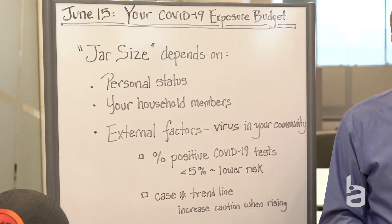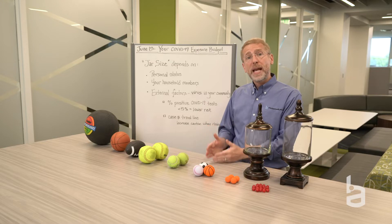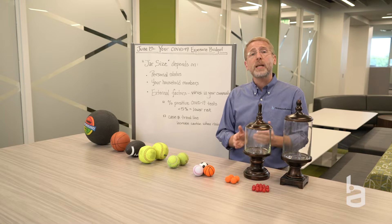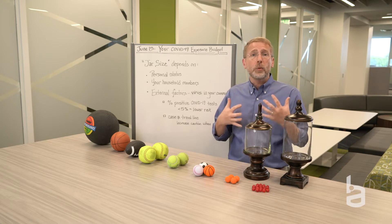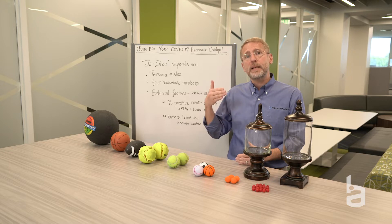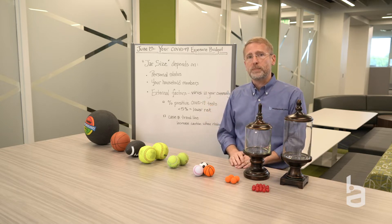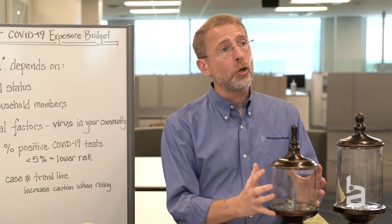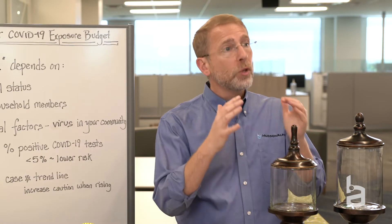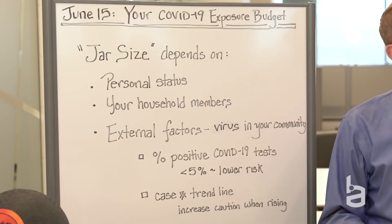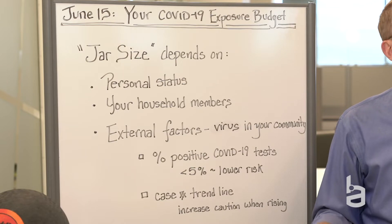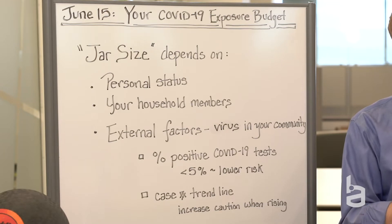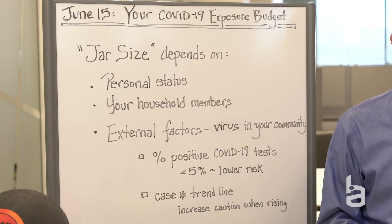The first is your own personal status, your own level of risk. We know age, gender, underlying risk factors like obesity and diabetes, and ethnicity — those are all things that influence an individual's risk of having a more severe set of symptoms if they get infected. If you have those higher-risk factors, your exposure jar is smaller in order to reduce your overall risk. If you have someone in your household who falls into those categories, your exposure jar is likely going to be smaller because you are trying to reduce the likelihood that you bring the virus home to that individual.